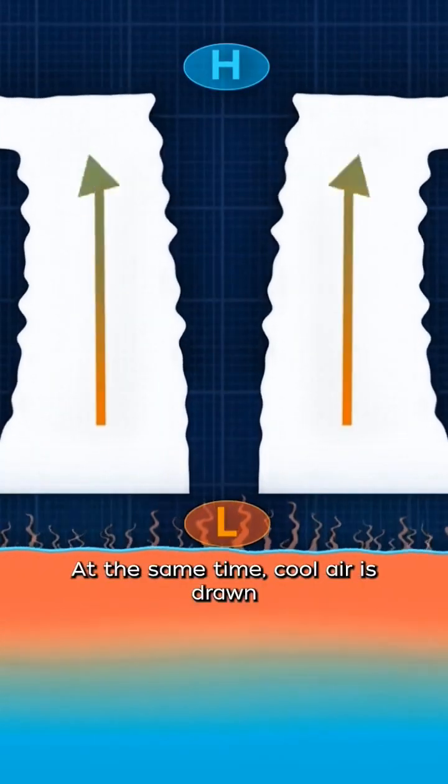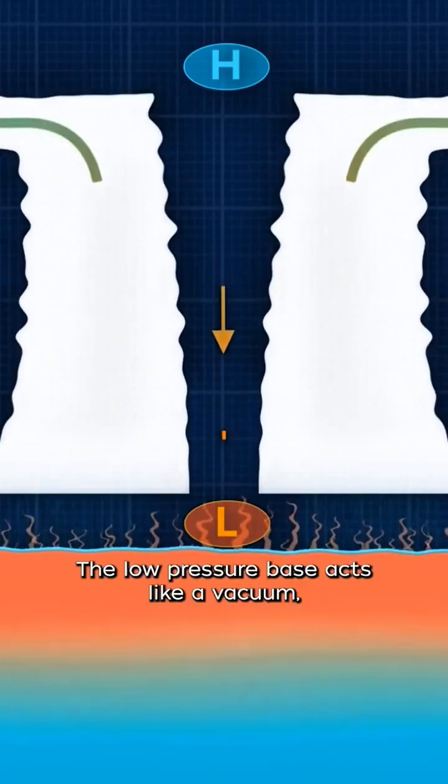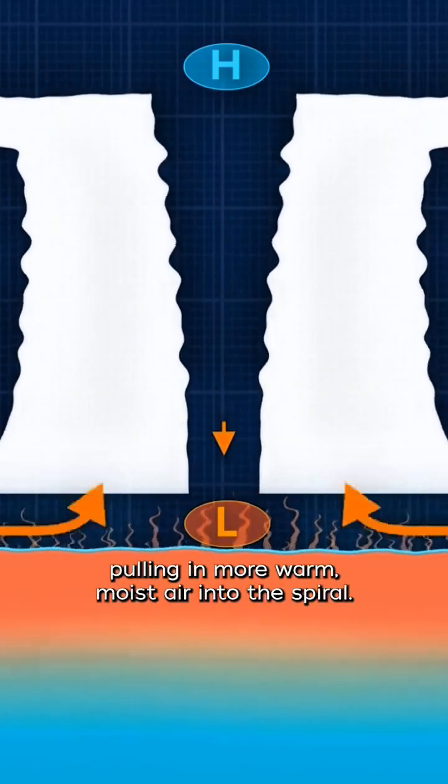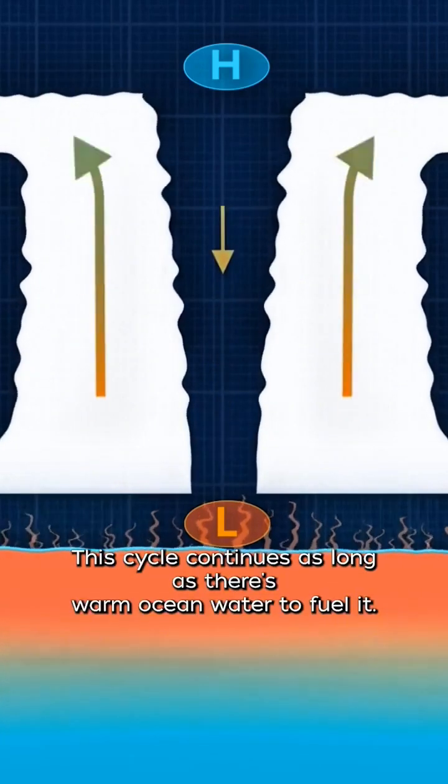At the same time, cool air is drawn towards the ocean surface where it gets reheated. The low-pressure base acts like a vacuum, pulling in more warm, moist air into the spiral. This cycle continues as long as there's warm ocean water to fuel it.